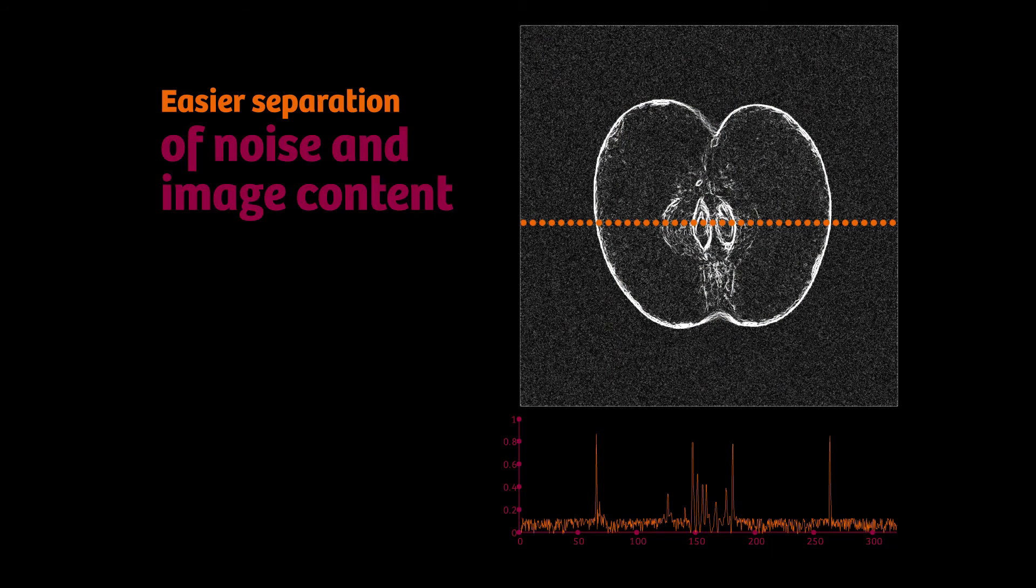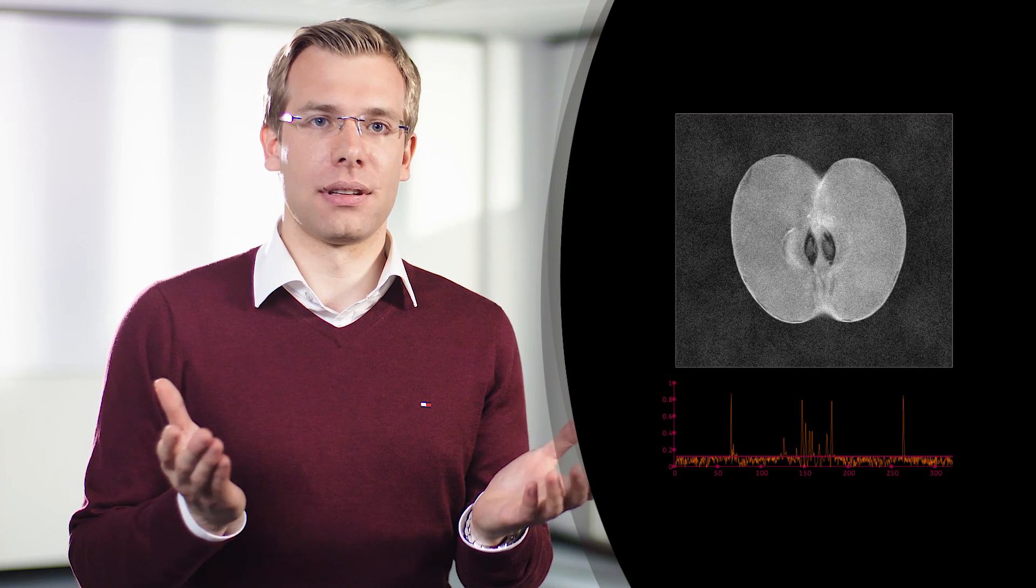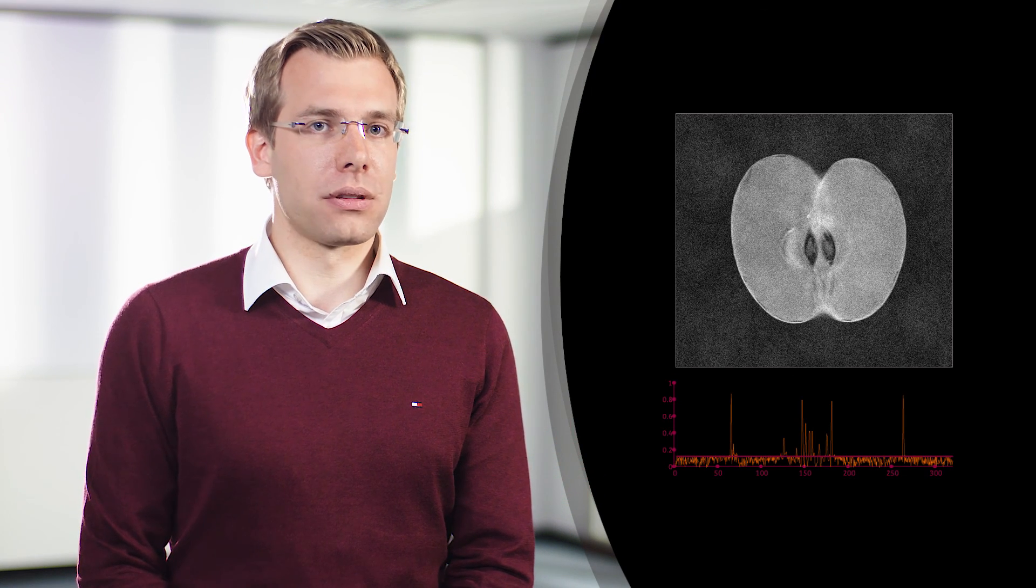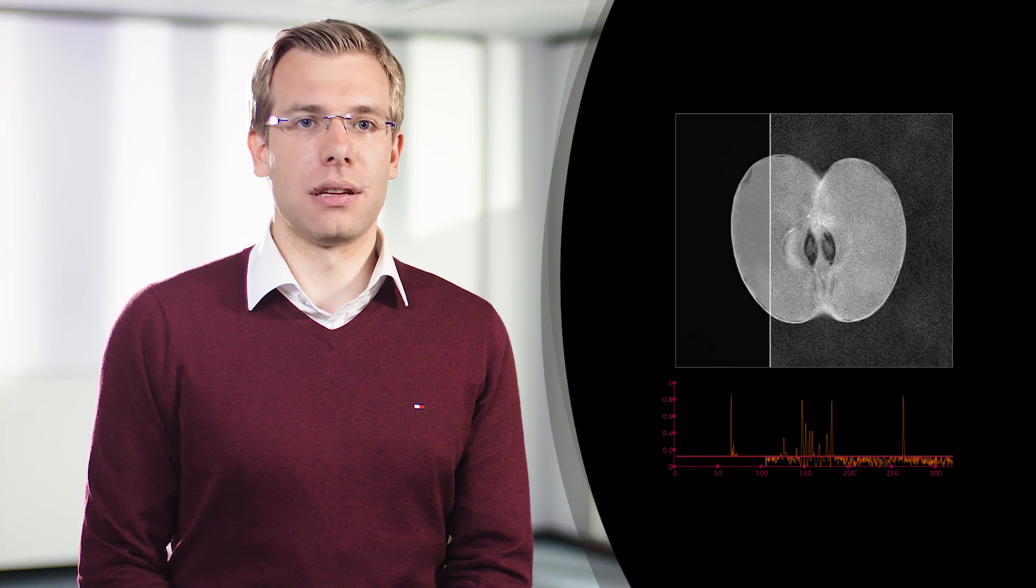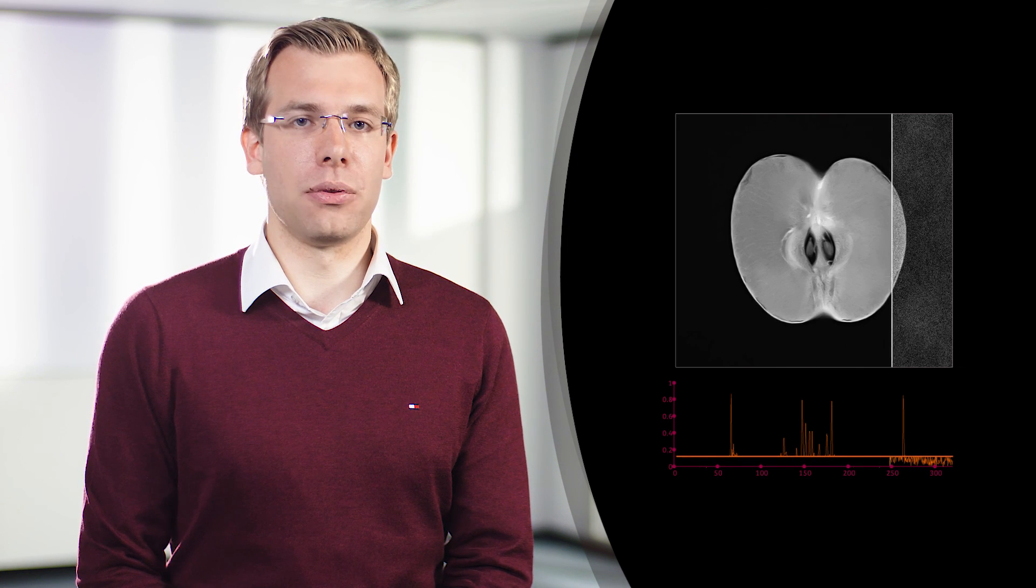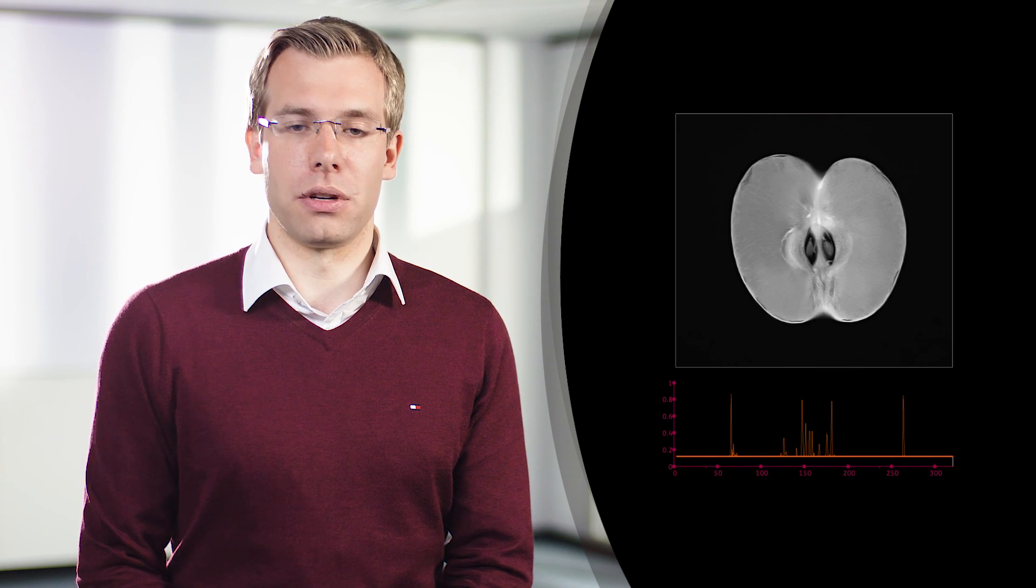For example, this can be performed with the so-called wavelet transform. If we now cut the same line, it's very easy to define a threshold and say all pixels below this threshold contain information that is irrelevant. And what happens? By removing all pixels below this threshold, much of the noise has disappeared and the image has been clearly improved when we transform it back to its original representation.